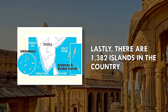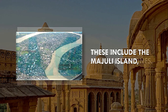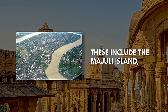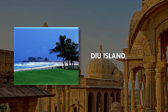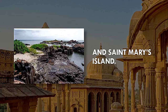Lastly, there are 1,382 islands in the country, including uninhabited ones. These include the Majuli Island, Diu Island, Divar Island, and St. Mary's Island.